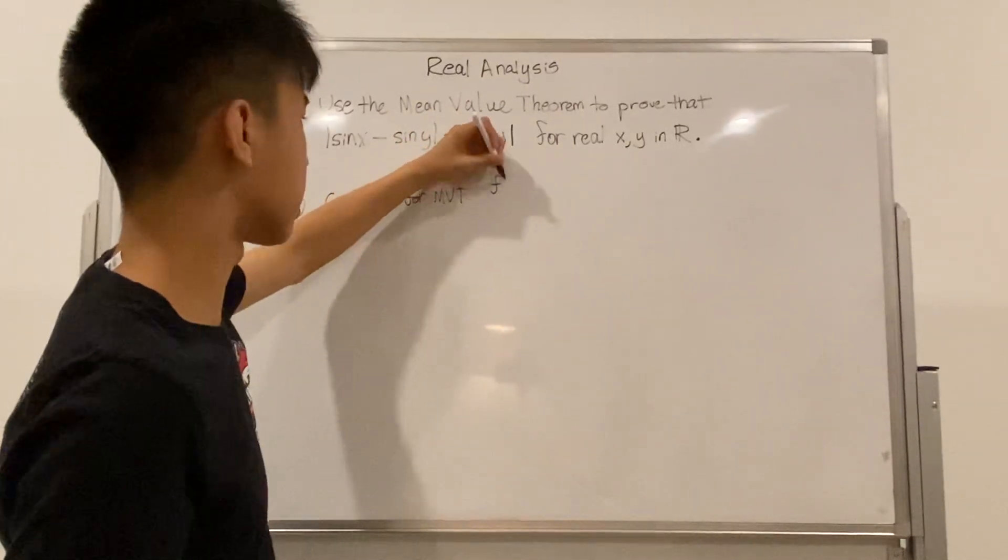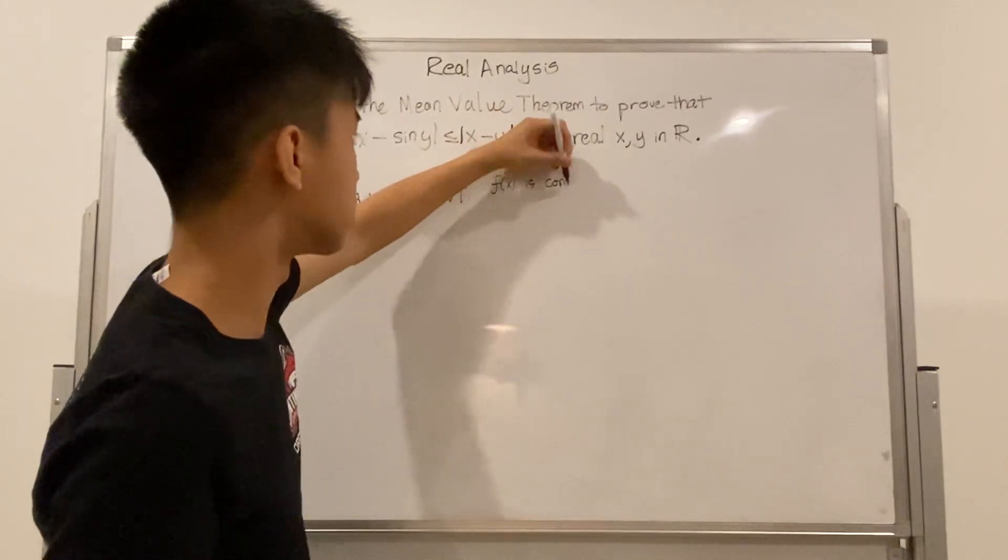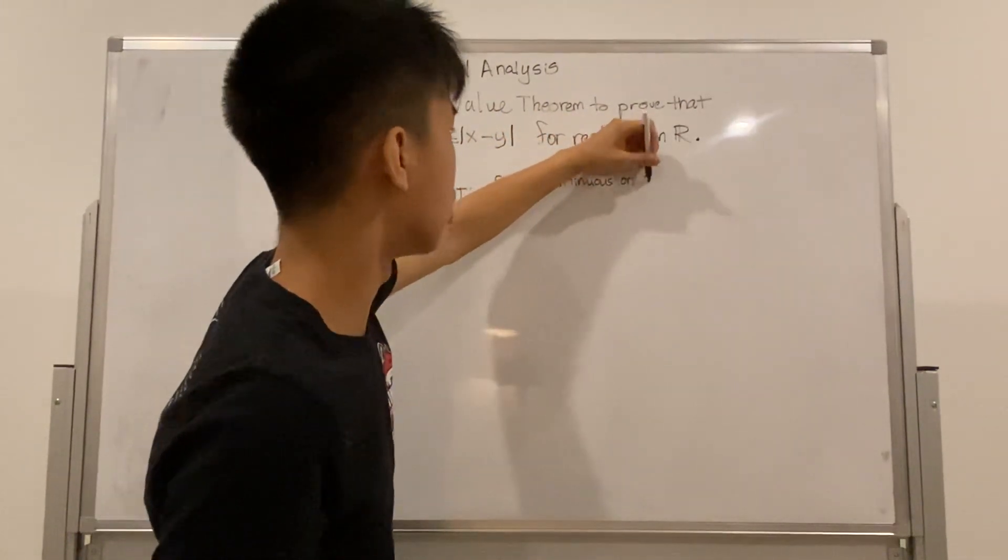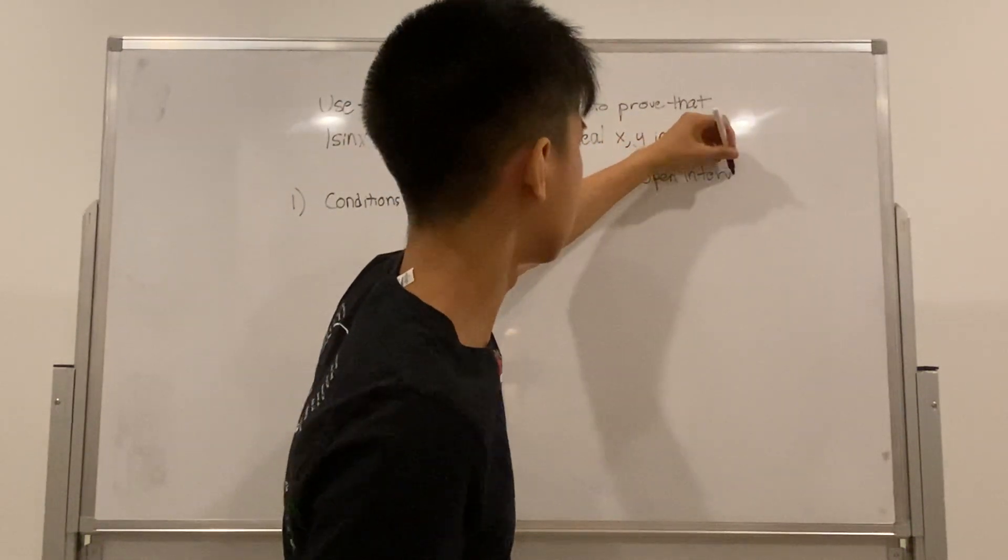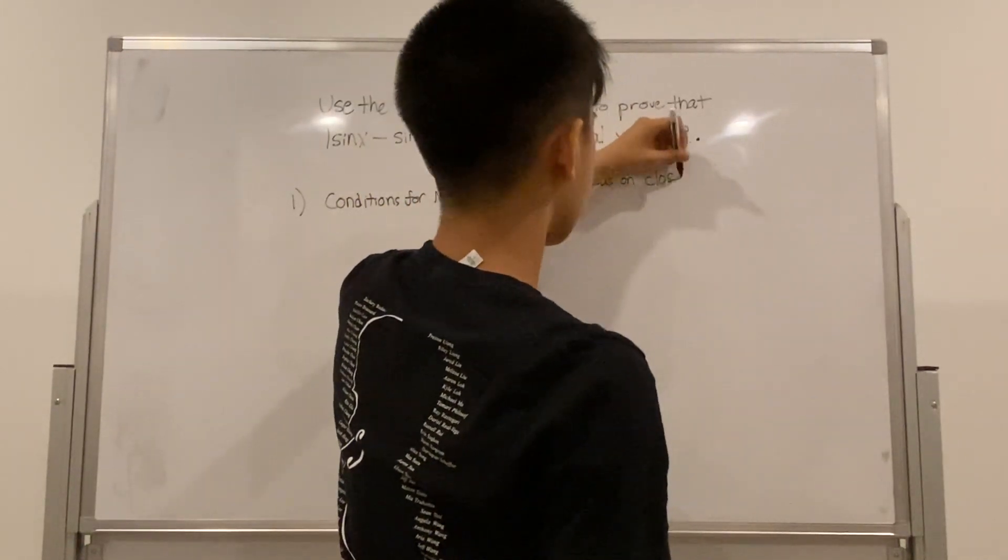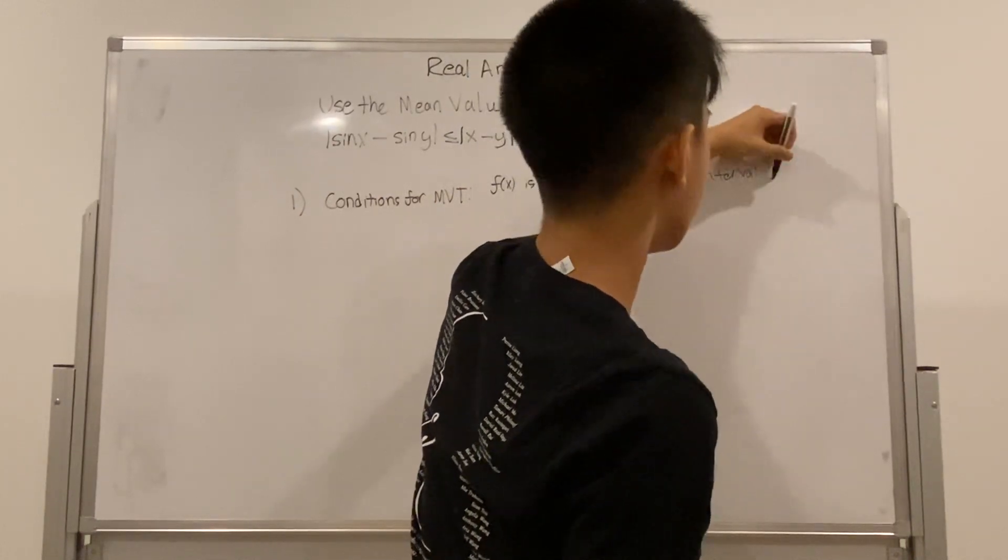First of all, we need to know that f of x is continuous on closed interval a to b.